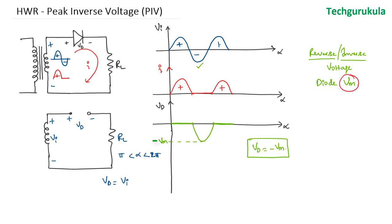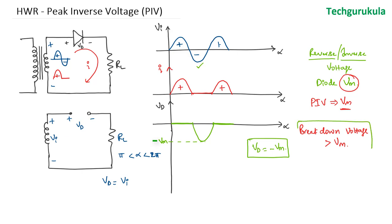This voltage is called the peak inverse voltage. Now why is peak inverse voltage important? That is because the diode we choose should be able to withstand this maximum reverse bias voltage without getting breakdown. So the PN junction diodes we choose should have a breakdown voltage greater than Vm. When designing rectifiers, we must make sure the breakdown voltages of selected diodes are greater than the peak inverse voltage seen in the rectifier circuit.